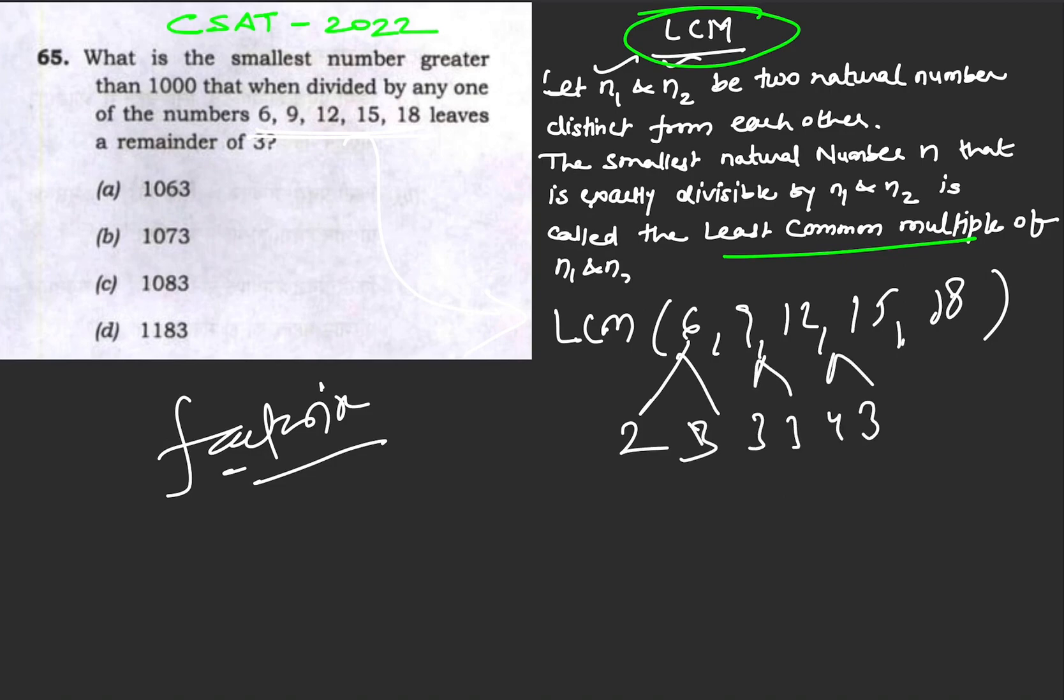See, 2×3 is 6. For 9, we need another 3. For 12, we need 4, but 2 is already there, so we only take 2. For 15, we need 5, and 3 is already there.